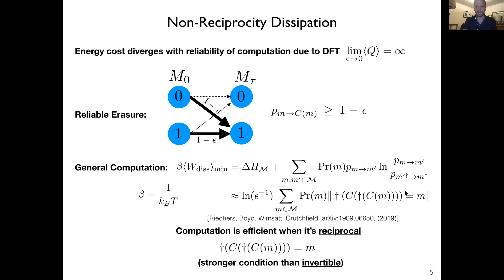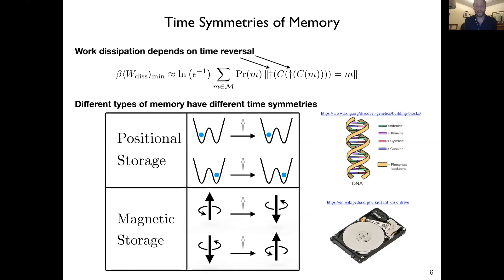When the computation is reciprocal — meaning that the computation followed by the time reversal, followed by the computation, followed by the time reversal again, maps back to itself for all states — then the computation is efficient because all those terms go to zero. This is a stronger condition than invertibility. The computation is guaranteed to be invertible if this holds, since C†C† is the inverse, but it is a more special case.